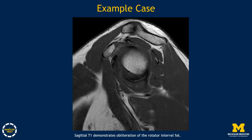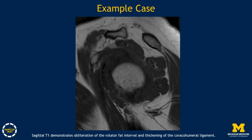This is another example case which shows obliteration of the rotator interval fat, as seen in the circled area. It is important to note that you don't need to have complete fatty obliteration of the rotator interval fat. However, a partially obliterated region of fat within the rotator interval may be enough to suggest adhesive capsulitis if there is a clinical suspicion for it. In this case, we have obliteration of the rotator interval fat and thickening of the coracohumeral ligament, with the arrow denoting thickening and indistinctness of the coracohumeral ligament and the circled area denoting fatty obliteration of the rotator interval.